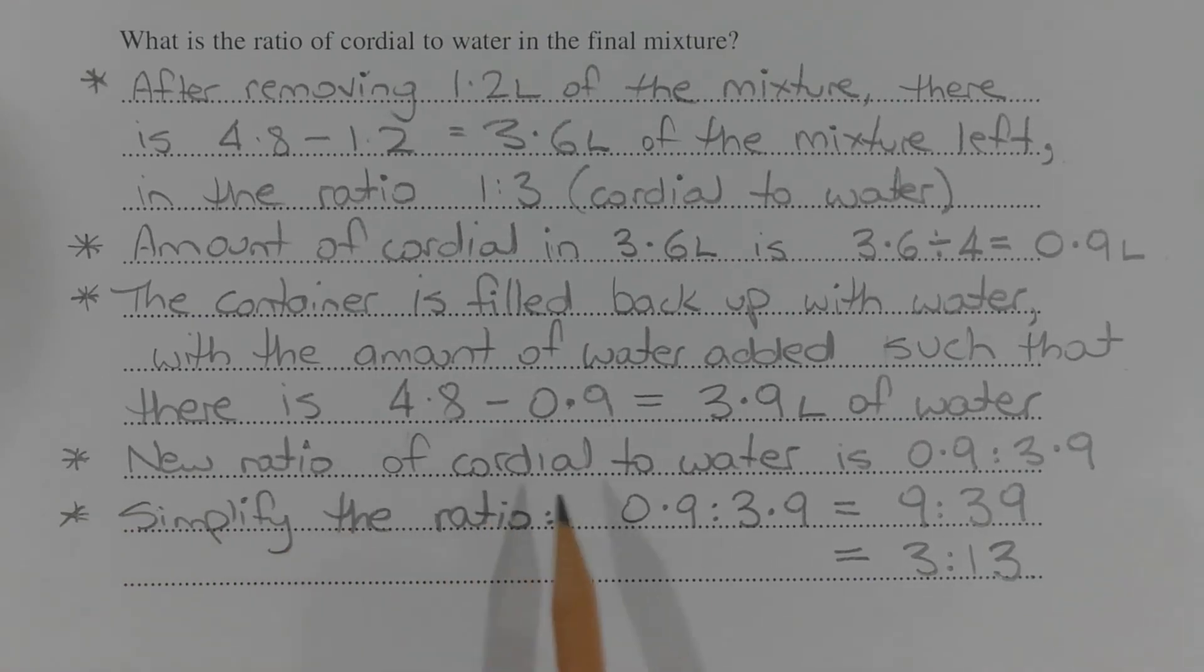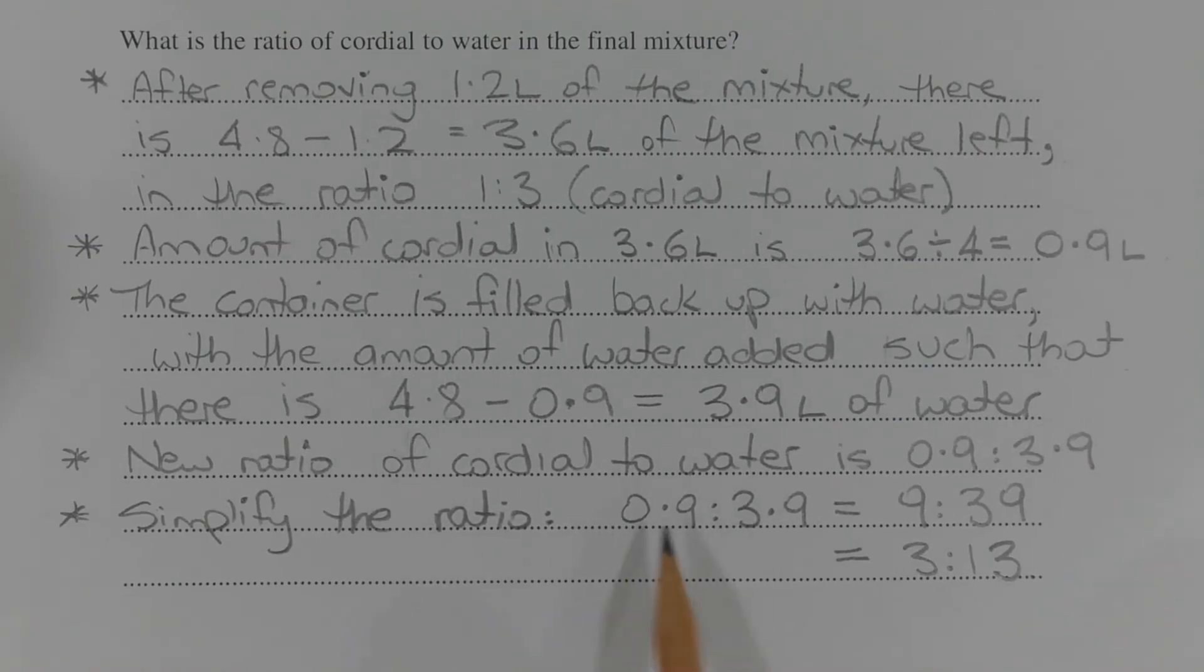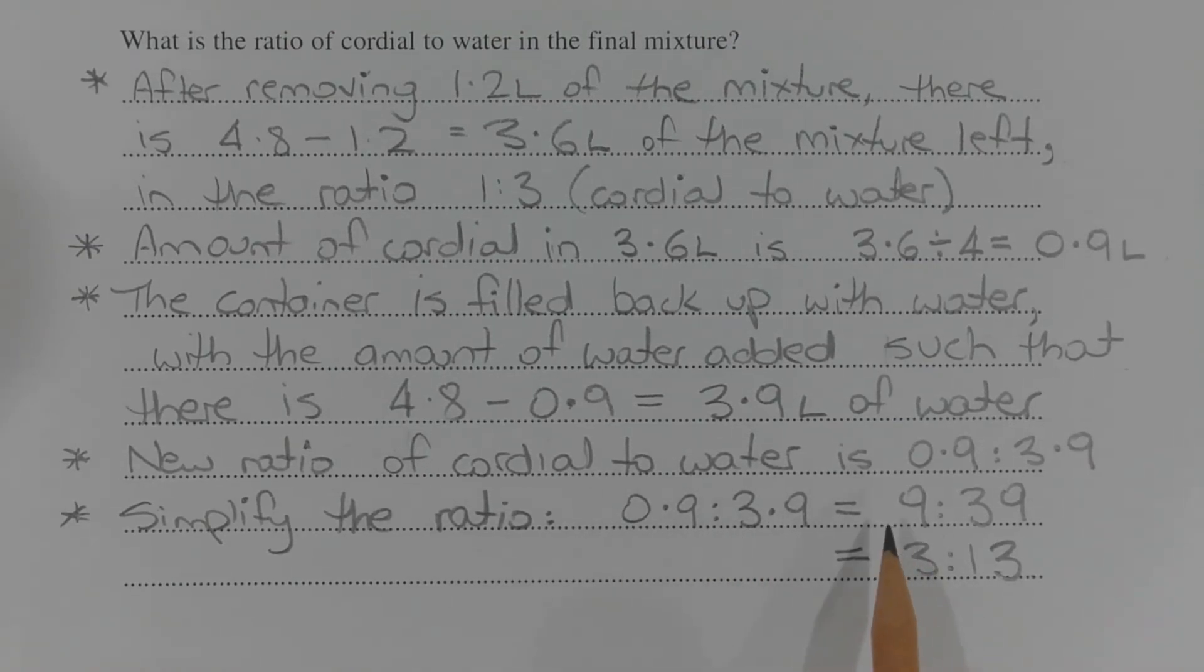So the new ratio of cordial to water is 0.9 to 3.9. The final step is to simplify the ratio so the ratio is expressed in terms of integers. So 0.9 to 3.9, multiplying both terms of the ratio by 10 is equal to 9 to 39, and then dividing both terms of the ratio by 3 equals 3 to 13.